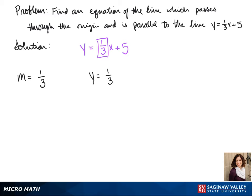Our equation so far is y equals 1/3 x plus b. We know that our line passes through the origin, so that means that our y-intercept is at 0. So that means our b value is 0.